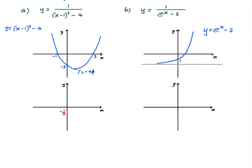The minimum point is at (1, negative 4). So this point will be transformed into (1, negative 1 over 4), because we take 1 over the y-coordinate. The x-coordinate stays the same. So that point becomes (1, negative 1 quarter).